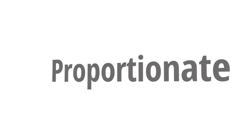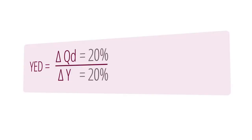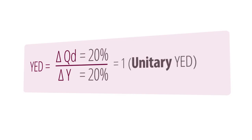For example, if the demand for a product changes in exactly the same proportion as income changes, then the result is proportionate and YED will equal 1. If it does, then YED is said to be unitary.